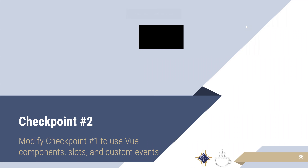We have a second checkpoint for you. Modify the program from the first checkpoint to include Vue components, slots, and custom events. Make it do the same thing or something more — just make sure you have a parent component, a child component, and custom events. Take about 10-15 minutes, and I'll display the sample code afterwards if you have any doubts or just want to check your code.